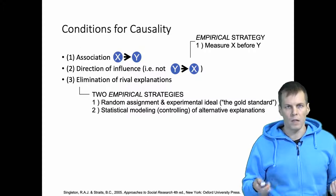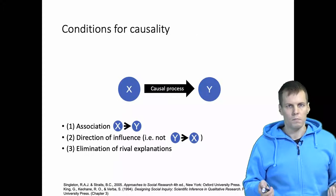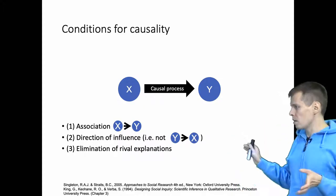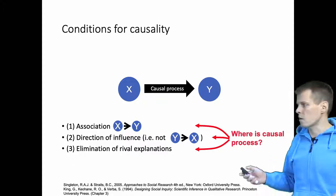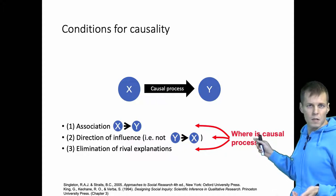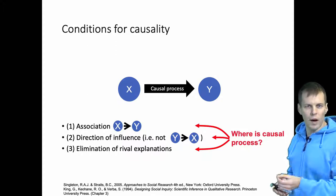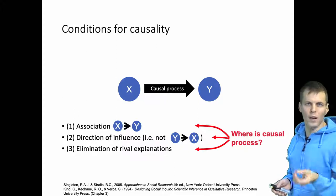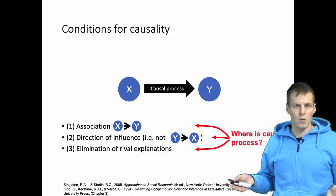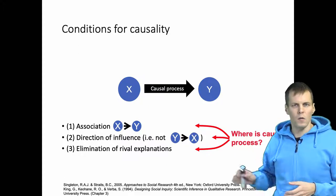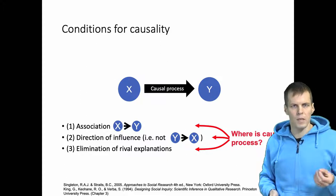So how exactly do qualitative studies make causal claims? To understand that, we have to understand that causality is not just three conditions — causality is a process. It's a process through which X influences Y. The question is: where exactly is the causal process in those three conditions? Basically, it's not there. We are only looking at X and Y and ruling out alternate explanations, but we're not looking at the causal process itself when we make causal claims using quantitative techniques. In contrast, in qualitative techniques, this causal process is something that must be explicitly present.